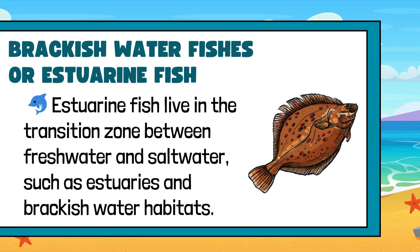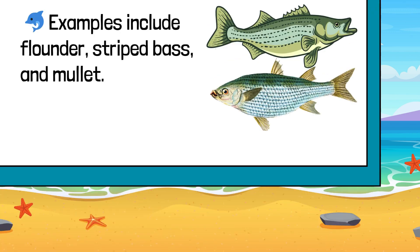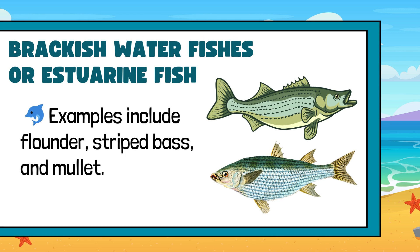Brackish water fishes are estuarine fish. Estuarine fish live in the transition zone between freshwater and saltwater, such as estuaries and brackish water habitats. Examples include flounder, striped bass, and mullet.